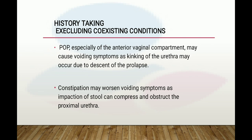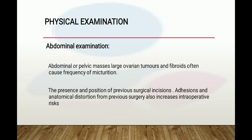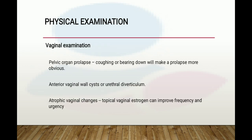In physical examination, a raised BMI is a risk factor for urinary incontinence, increases the risk of failed surgical intervention, and compromises the efficacy of surgery — women with raised BMI should be encouraged to lose weight. On abdominal examination, abdominal or pelvic masses such as large ovarian tumors and fibroids often cause frequency of micturition. The presence and position of previous surgical incisions and anatomical distortion from previous surgery also increase intraoperative risk.